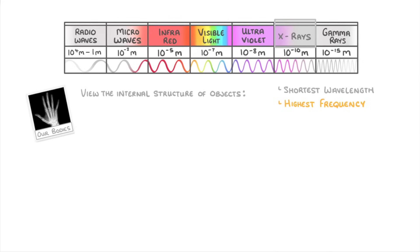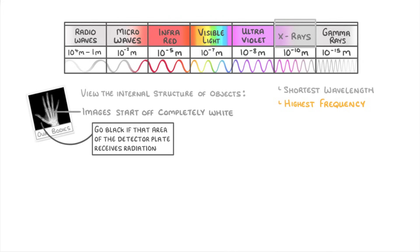One of the odd things with X-ray images, though, is that the images start off completely white, and only go black if that area of the detector plate receives radiation. So it's actually the dense areas, like bone, that appear white, while pretty much everything else is either black or a shade of grey.